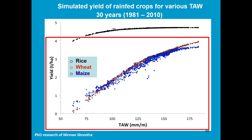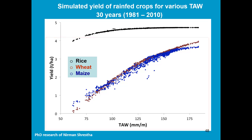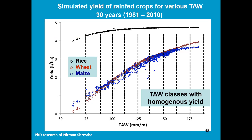The smaller the tau, the less water can be retained in the soil profile between rain events. Therefore, it might be a good practice to classify the soils as a function of tau, because that seems to be closely related with the yield.